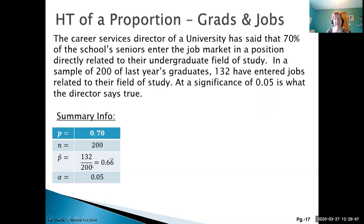Here's the ratio: 132 over 200, which is 0.66 repeating. Please make sure you're using the repeating decimal - don't round this figure. Finally, we have our significance level of 0.05, so alpha equals 0.05.